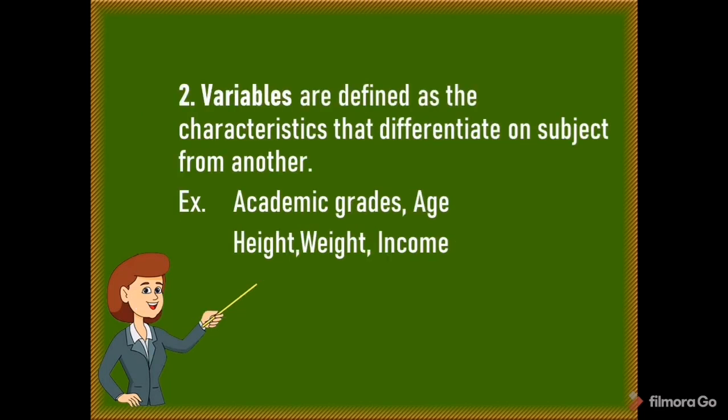The second term is variables. Variables are defined as the characteristics that differentiate one subject from another. Here are some examples of variables: academic grades, age, height, weight, and income.